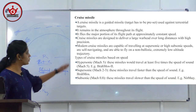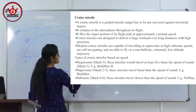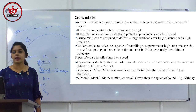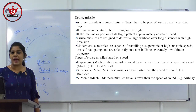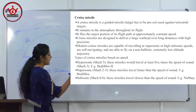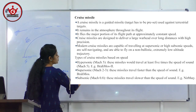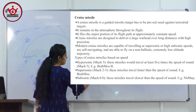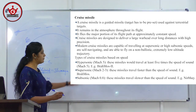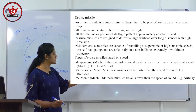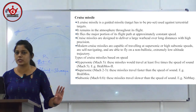Moving forward, we have cruise missiles. Cruise missiles are classified based on their speed, measured in Mach. We have hypersonic missiles — example, BrahMos-2. We have supersonic missiles — example, BrahMos. We have subsonic missiles — example, Nirbhay. Hypersonic is above Mach 5, supersonic is Mach 2 to 3, and subsonic is around Mach 0.8.